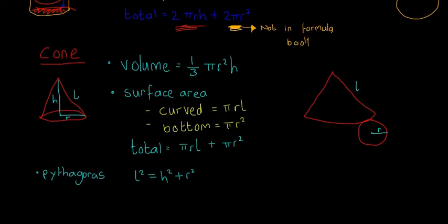Next, a brief look at the cone. We have h as the height, r as the radius of the circle on the bottom, and l as the length of the diagonal slant. The volume is 1 over 3 pi r squared h — in the formula book. The surface area breaks into the curved surface area, which is pi r l, and the bottom circle, which is pi r squared. The total surface area is pi r l plus pi r squared. Be careful about what they ask — just the curved, just the bottom, or the total.